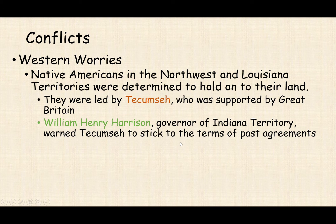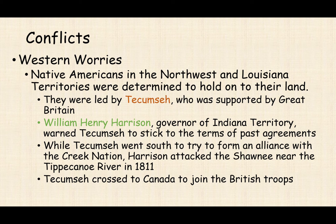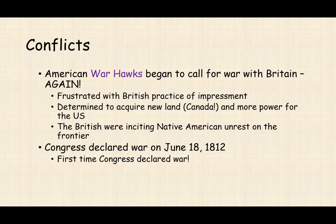William Henry Harrison — a future president, then governor of Indiana Territory — warns Tecumseh to abide by existing agreements or face consequences. While Tecumseh travels south to recruit other tribes, particularly the Creek Nation, into his alliance, Harrison attacks the Shawnee near the Tippecanoe River in 1811. Tecumseh then crosses into Canada and joins British troops, which makes the British look like they are deliberately sowing discontent — and they were.